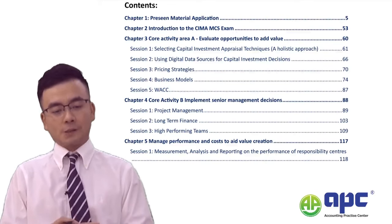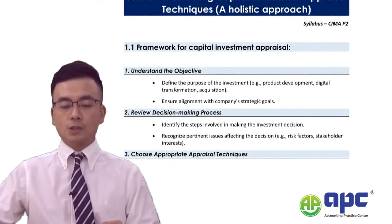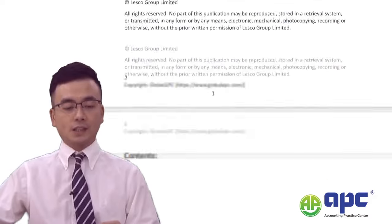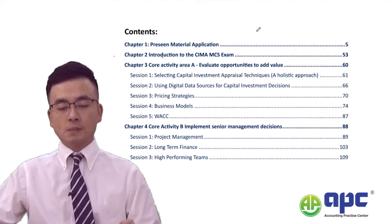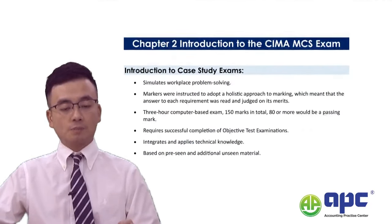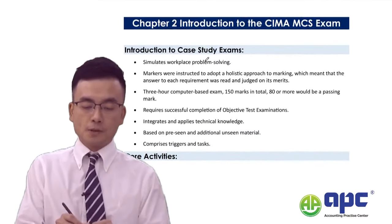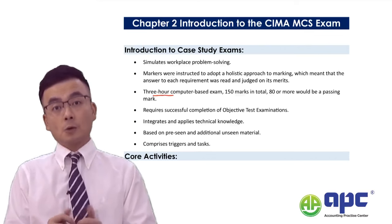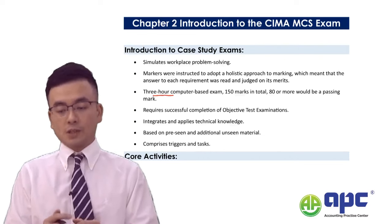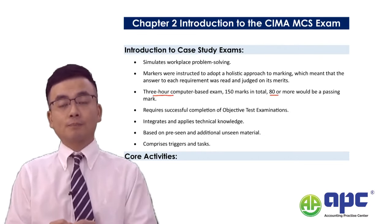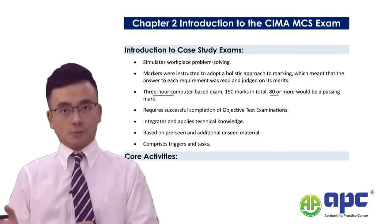Welcome back to the Management Case Study. It's time to start with Chapter 2 onwards and see how we can pass the MCS exam easily. Let's introduce the CIMA MCS exam theory in Chapter 2. This exam is 3 hours, so 180 minutes in total. In the actual exam, you need to score at least 80 marks, but how 80 marks are calculated is CIMA's business. What you need to do is follow the exam technique very closely.